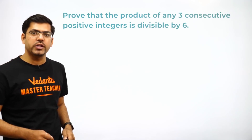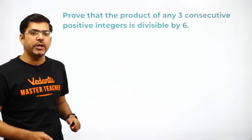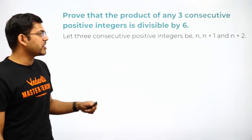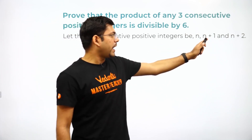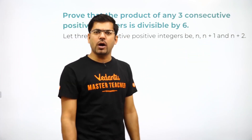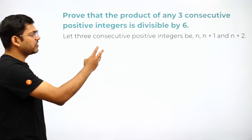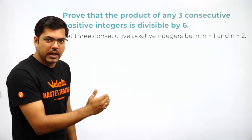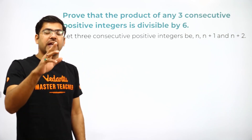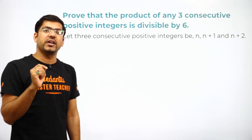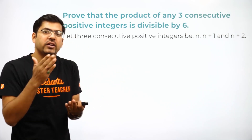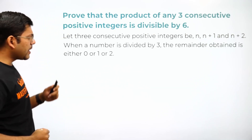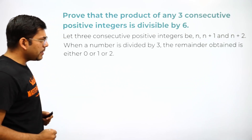The very first step: let three consecutive positive integers be n, n+1, and n+2. This is the standard assumption. Consecutive integers means one after another.